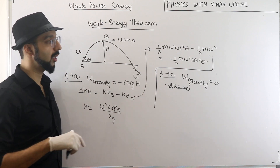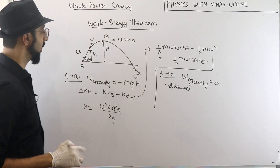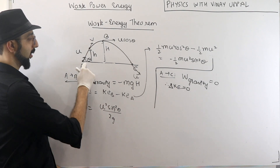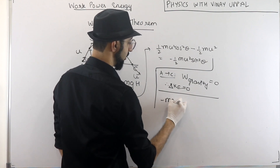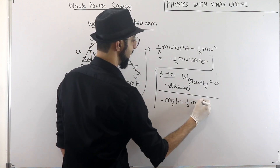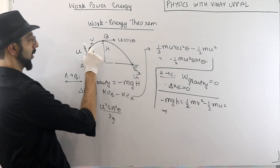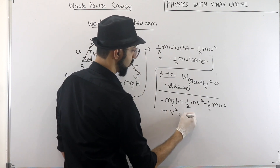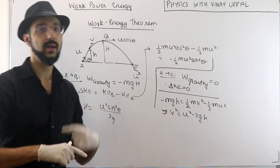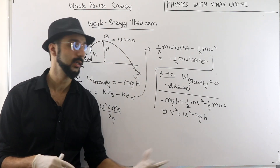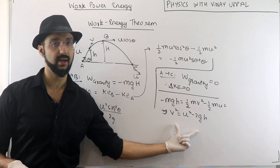Work-energy theorem also gives us a quick way to calculate speed. From point A to some height h, work done by gravity is -mgh. That should equal change in kinetic energy: ½mv² − ½mu². So v² = u² − 2gh. This is the third equation of motion, but derived quickly using work-energy theorem — a much quicker method.